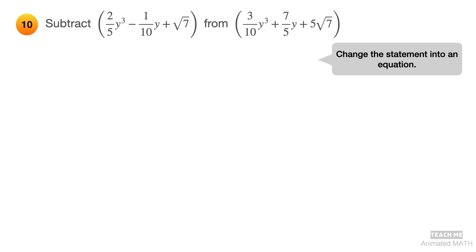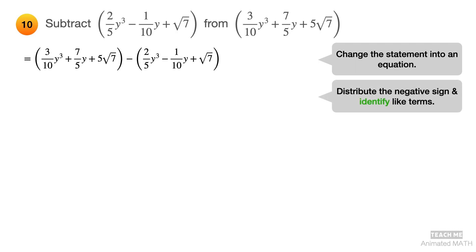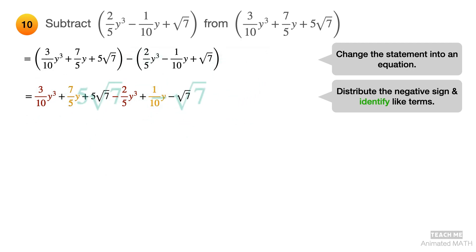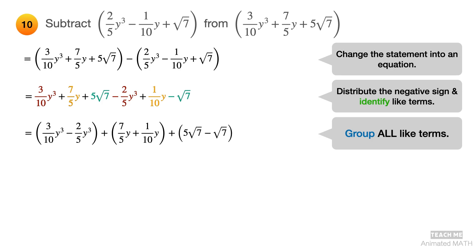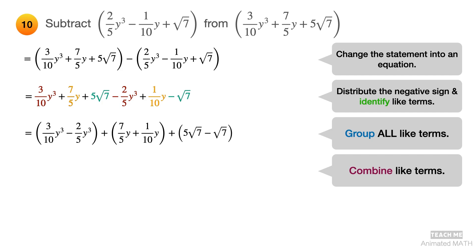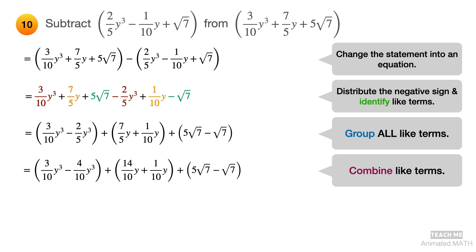Change the given statement into an equation. Distribute the negative sign and identify like terms. Next, group all like terms and arrange them in standard form. Group the terms with y cubed. Group the terms with y. Group the constants. Last, combine like terms using addition and subtraction. Do a little bit of fraction addition and subtraction first, then simplify the expression. And the final answer is negative one-tenth y cubed plus three-halves y plus 4 square root of 7.